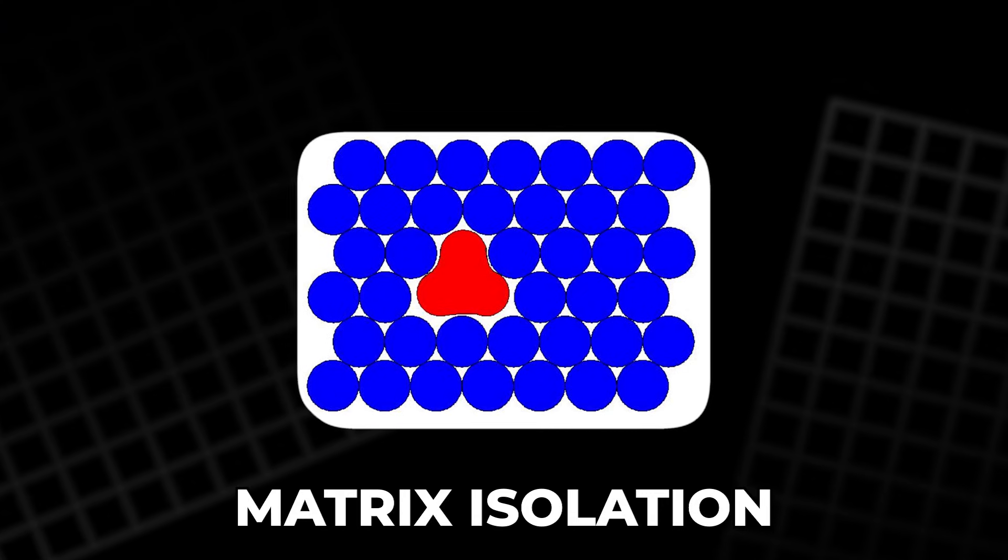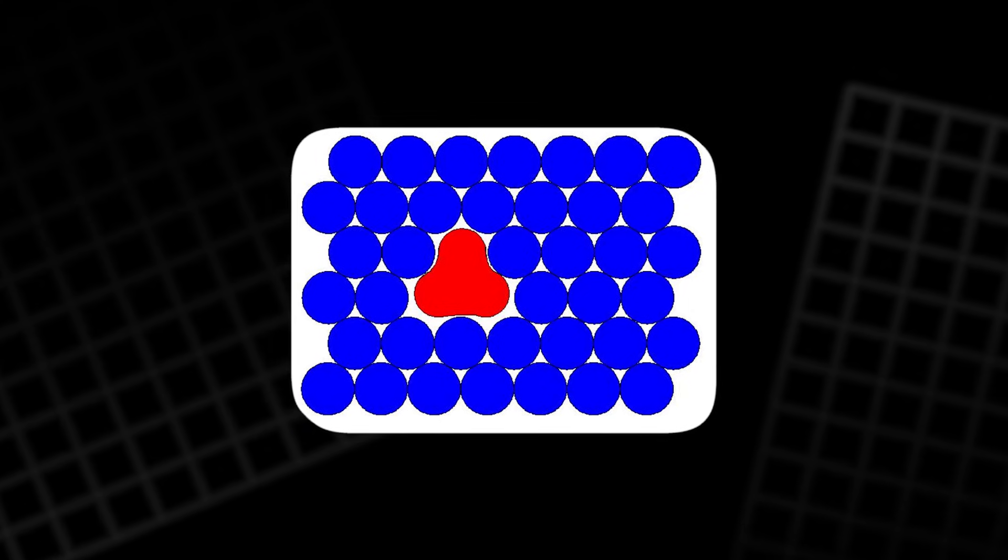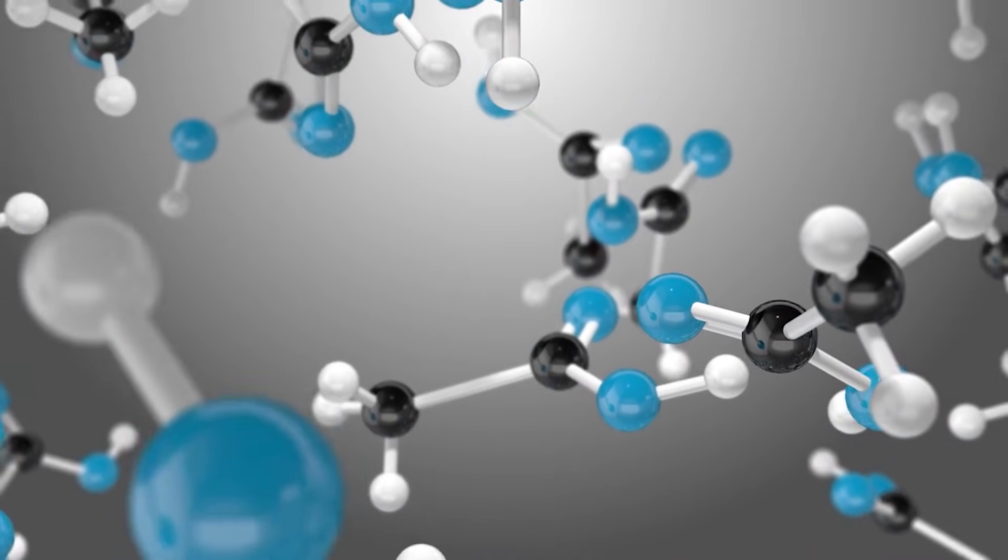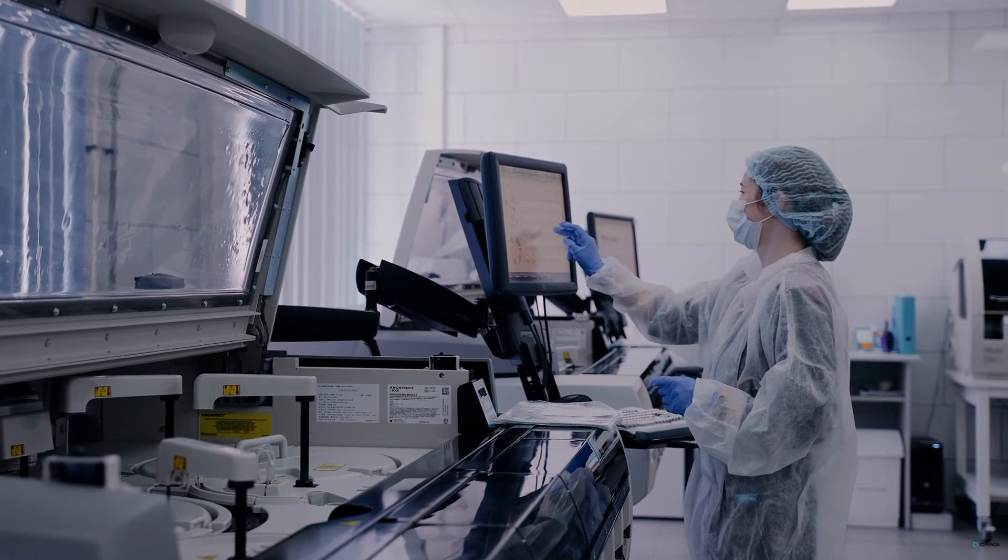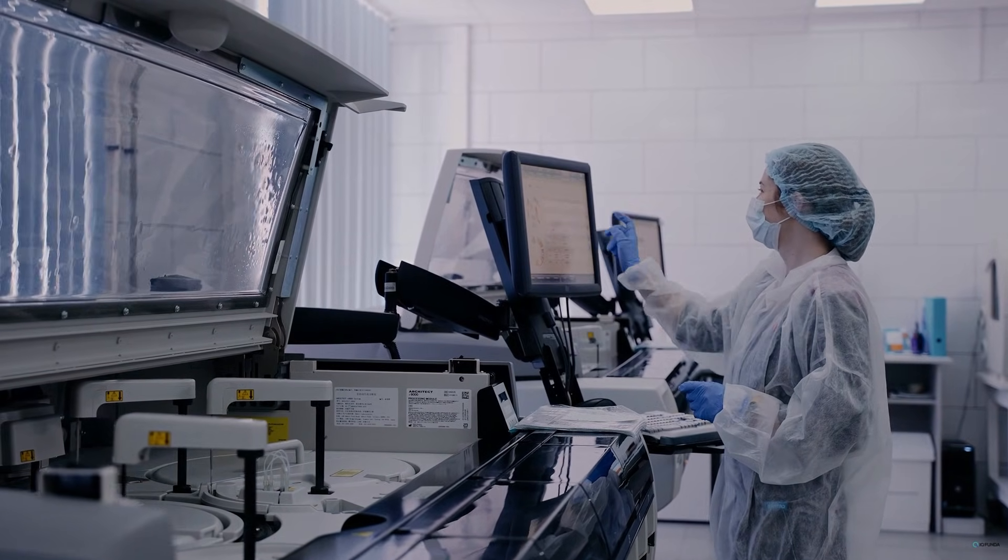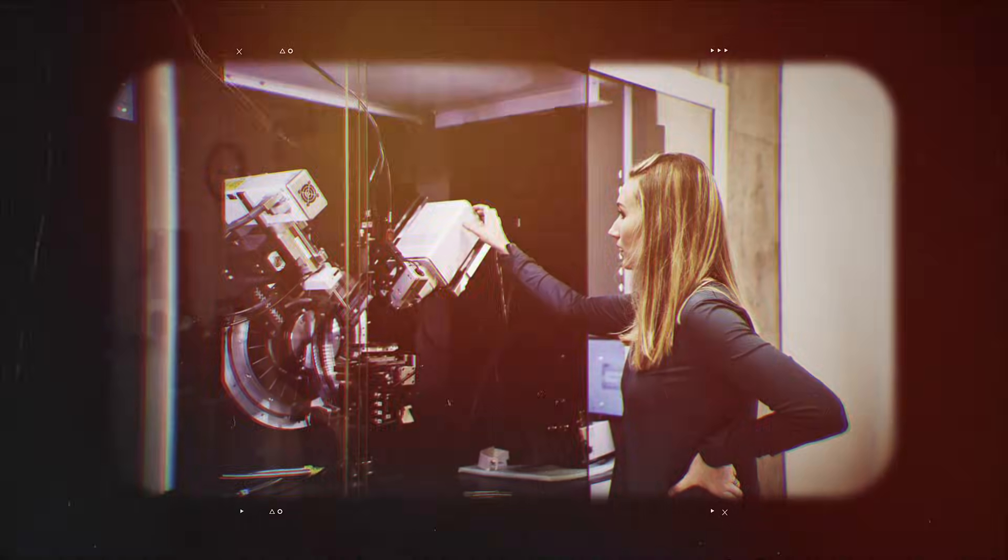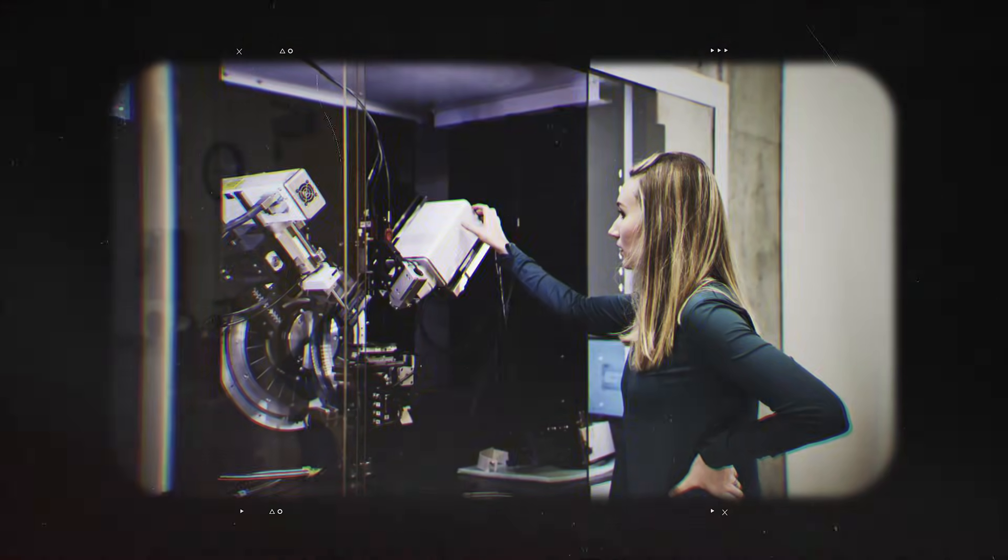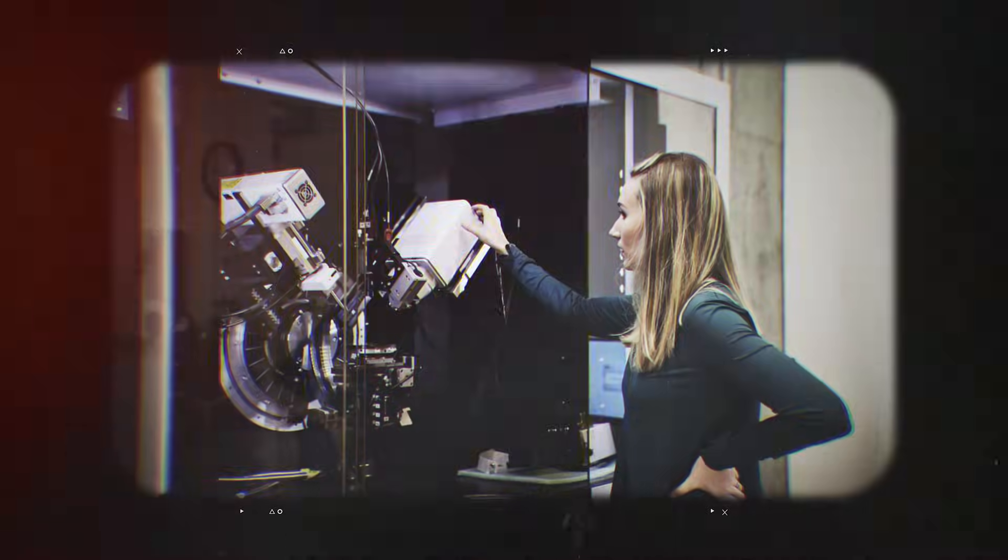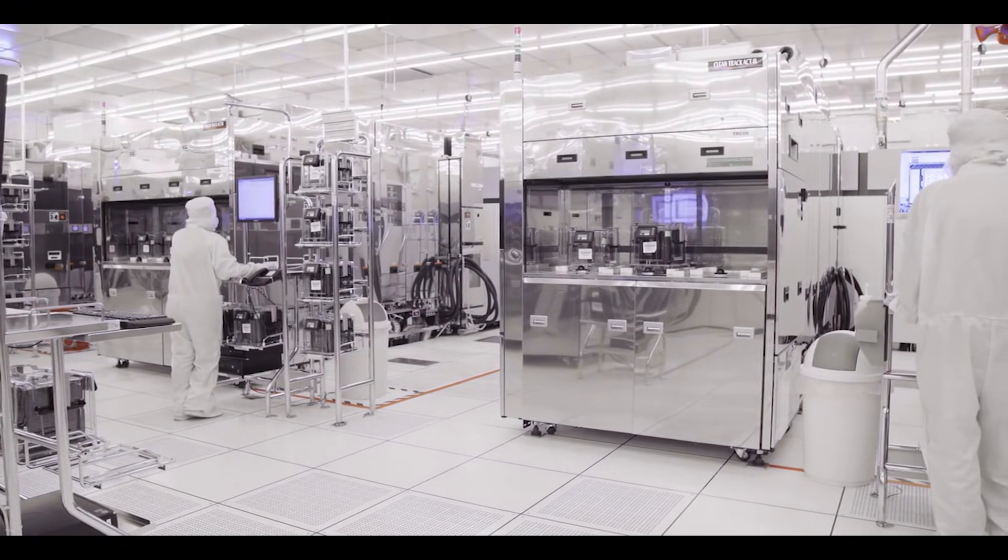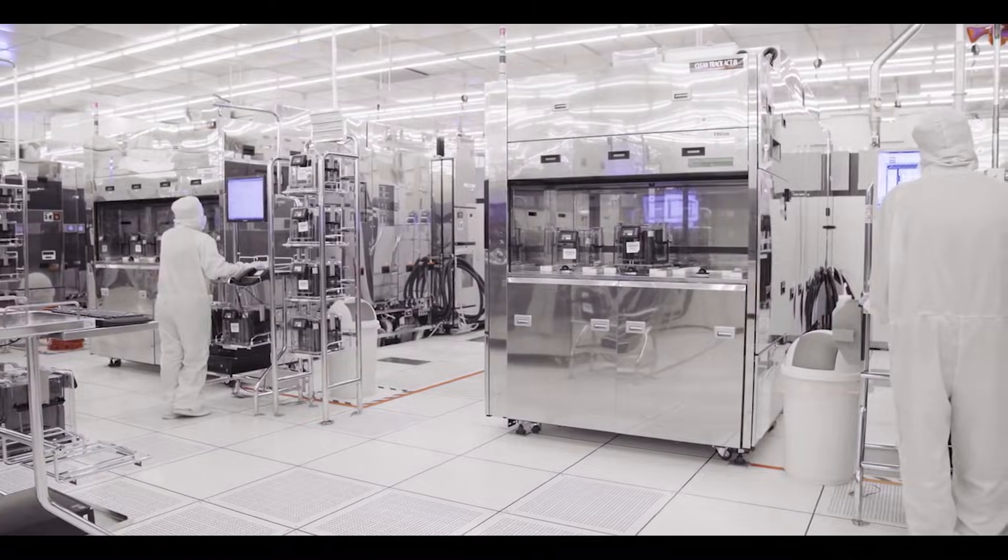This matrix isolation approach is a classic way to study short-lived species, but doing it for a neutral polynitrogen this large is what makes the work stand out. That is why the exact temperature matters, and why liquid nitrogen is the practical tool here. Once trapped, the team could probe the molecule with advanced spectroscopy and confirm its identity.